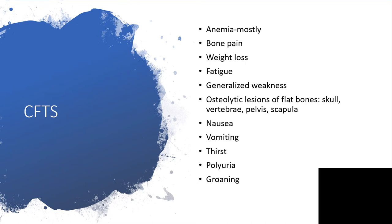What are the clinical features? Anemia mostly — most of the time someone is feeling weak, visits the clinic, a complete blood count shows decreased hematocrit, and they want to do further investigations, leading to this diagnosis. There will be bone pain, weight loss, fatigue, and generalized weakness. The osteolytic lesions of flat bones like skull, vertebra, pelvis, and scapula will be obvious on X-ray and CT or MRI.